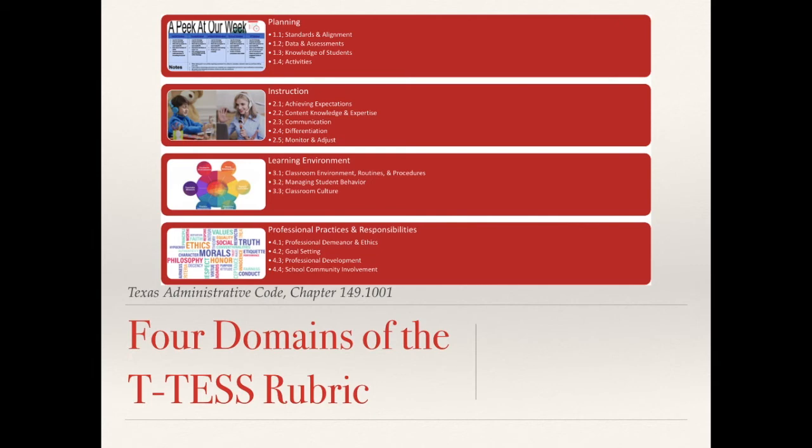There are 4 domains to the T-TESS rubric: the planning domain, the instruction domain, the learning environment domain, and professional practices and responsibilities. The planning domain includes sections on standards and alignment, data and assessments, knowledge of students, and activities.